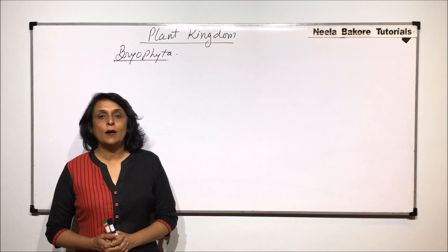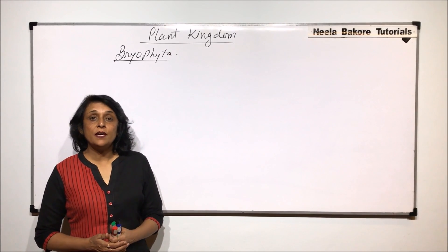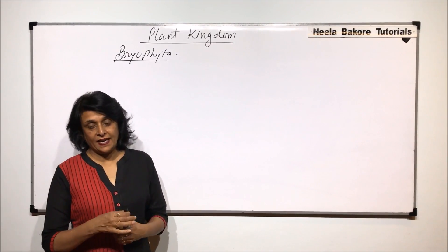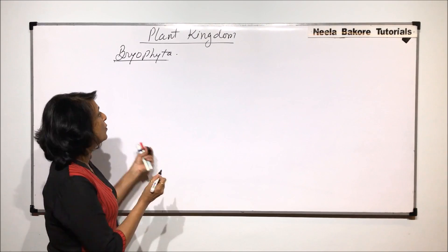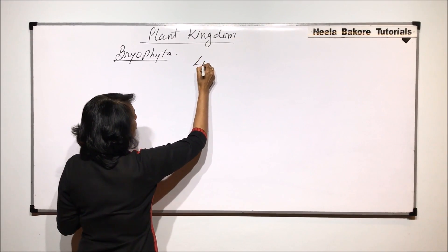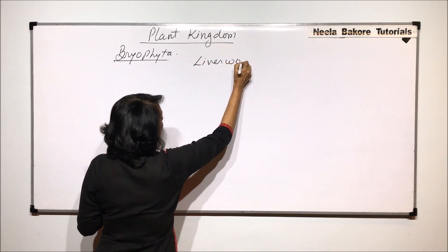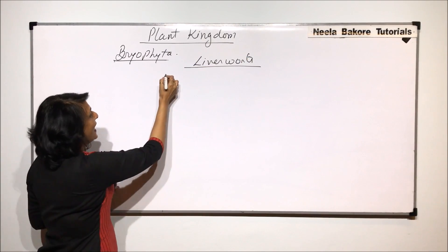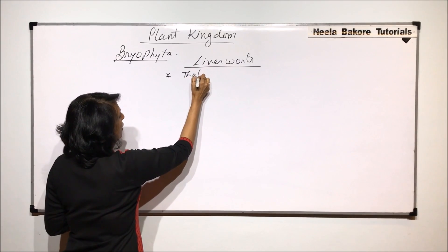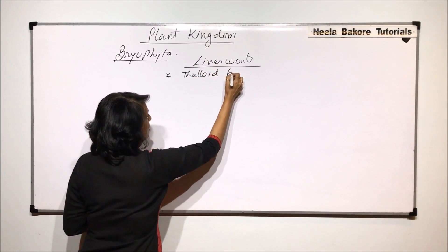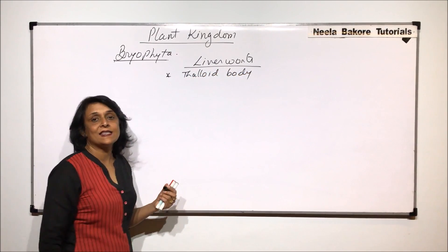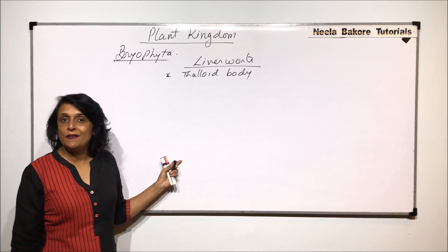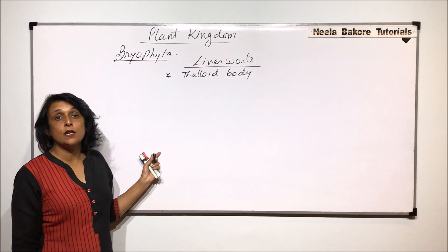In this part, we will talk about the primitive bryophytes, i.e. Riccia and Marchantia. They are together known as liverworts. Liverworts are primitive because they have a thalloid body — the body is thallus-like, meaning it is not differentiated into root, stem, or leaf-like structures, as it was in the case of Funaria.